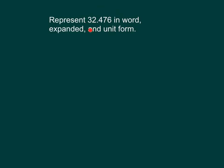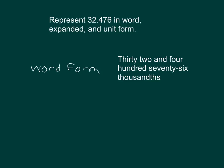How would you have gone about reading this? It's equal to what? 32 and 476 thousandths. So for word form, that's what we would write. And I typed that out there.